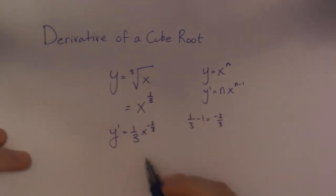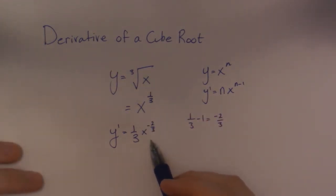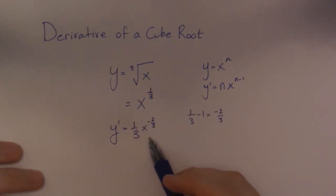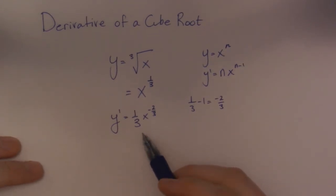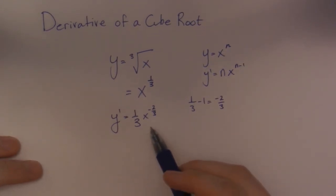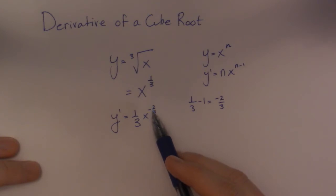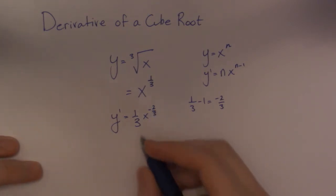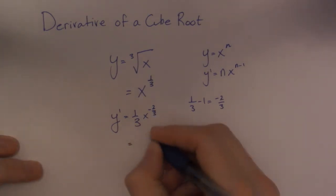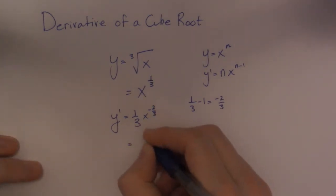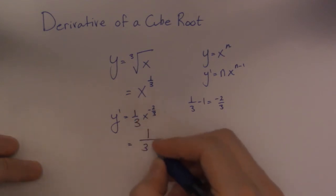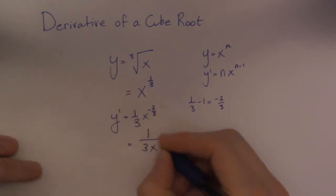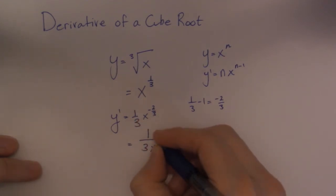So that form generally works most of the time. Now you may have a particularly stubborn calculus teacher who doesn't like negative exponents. So if that's the case, you take it down to the bottom because it's a negative exponent, and it becomes 1 over x to the 2 over 3.